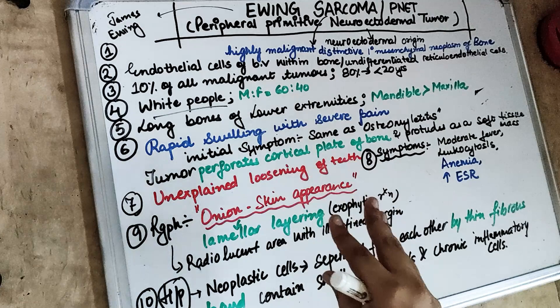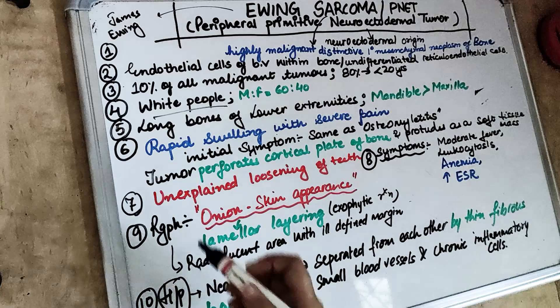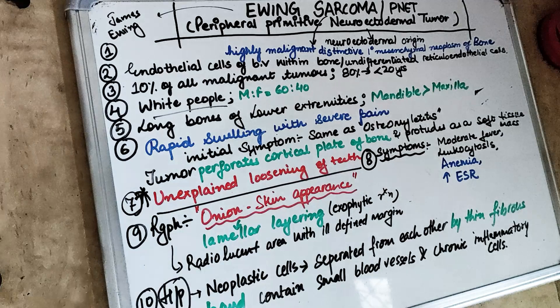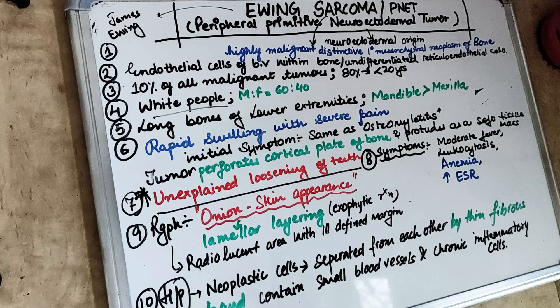The initial symptoms of Ewing Sarcoma are similar to those of osteomyelitis. The tumour perforates the cortical plate of the bone and protrudes as a soft tissue mass overlying the affected bone. Clinical features include unexplained loosening of teeth, leukocytosis, moderate fever, anaemia, and an increased ESR rate.